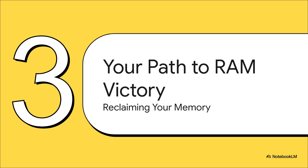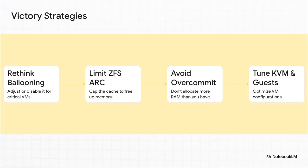Enough of the doom and gloom — let's talk about how to fix this. This is your path to reclaiming your system's memory. We've got a four-part battle plan: first, rethink how we use ballooning; then, slap a hard limit on that ZFS cache; after that, stop over-committing RAM; and finally, fine-tune some KVM and guest settings.